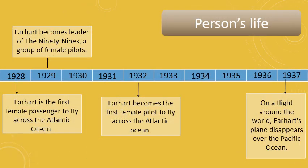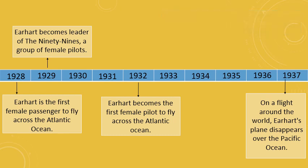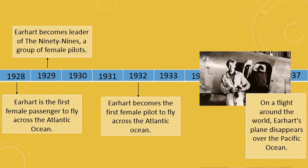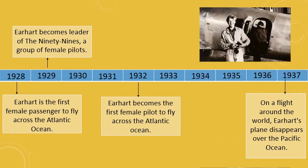Some timelines show the events of a person's life. This timeline shows the achievements of Amelia Earhart before she disappeared in 1937. This timeline shows word descriptions instead of images.